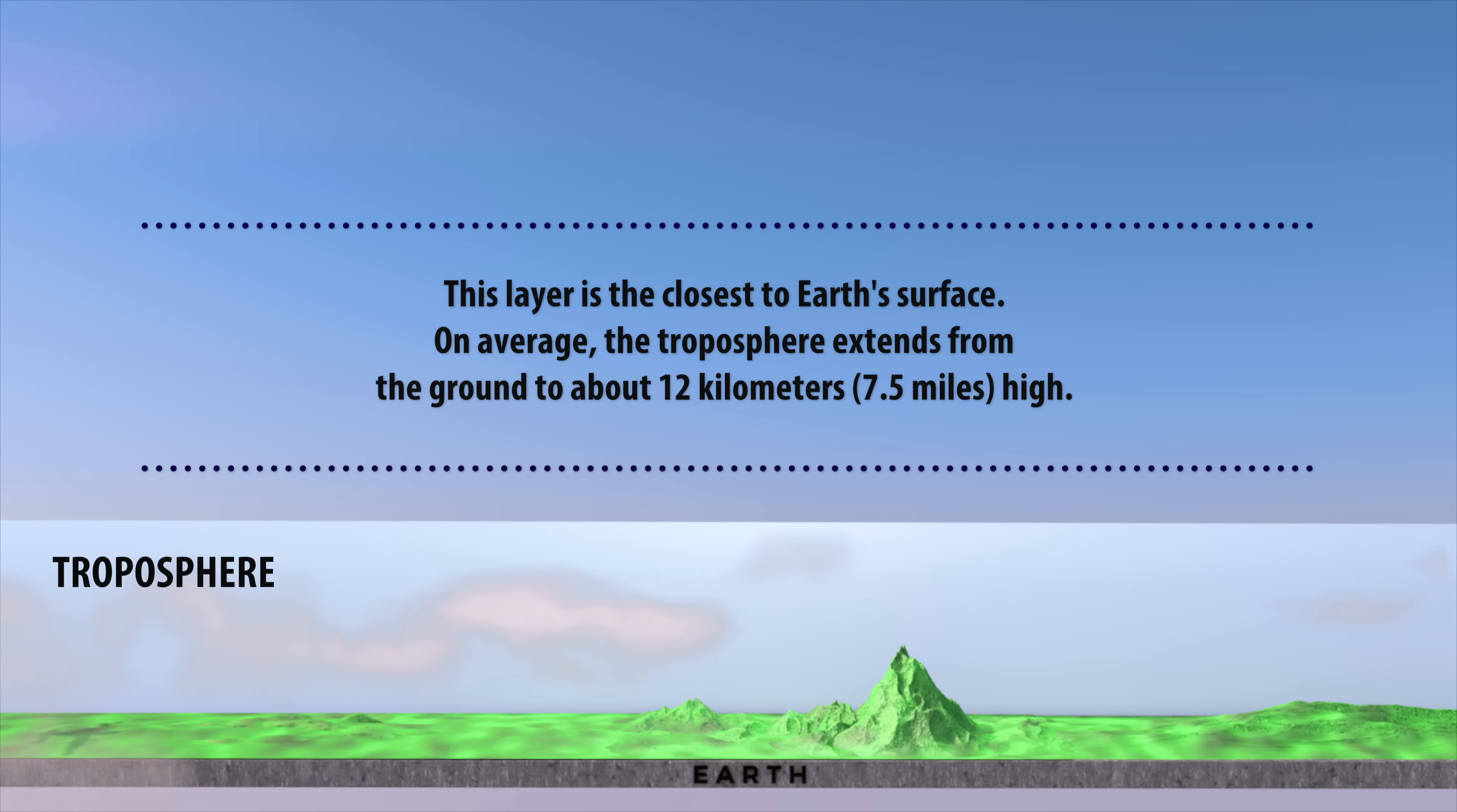This layer is the closest to Earth's surface. On average, the troposphere extends from the ground to about 12 km or 7.5 miles high.